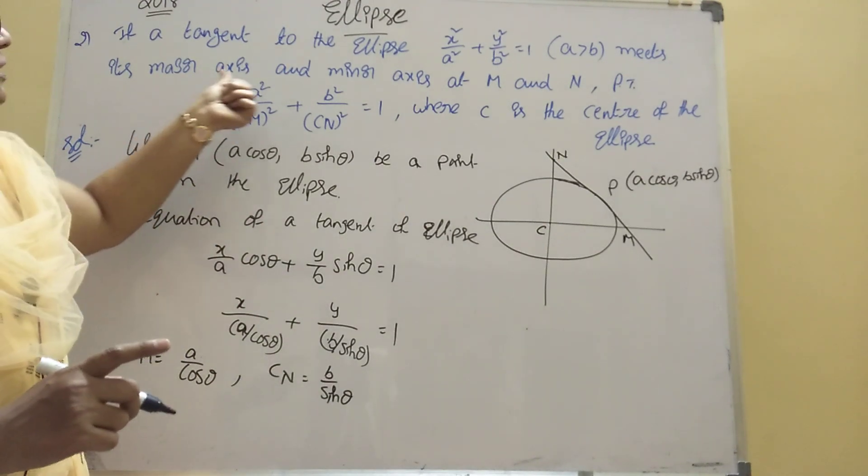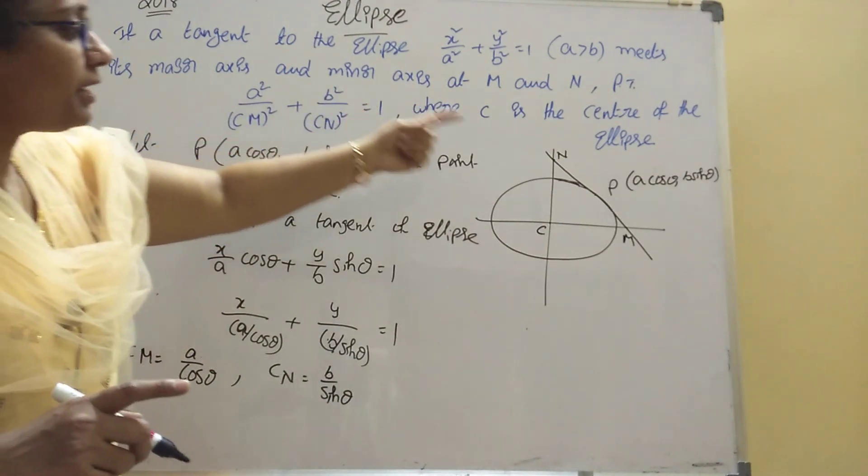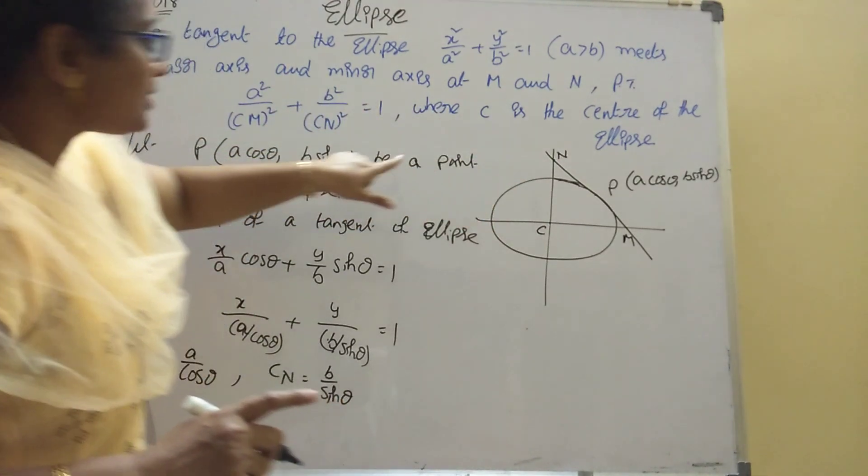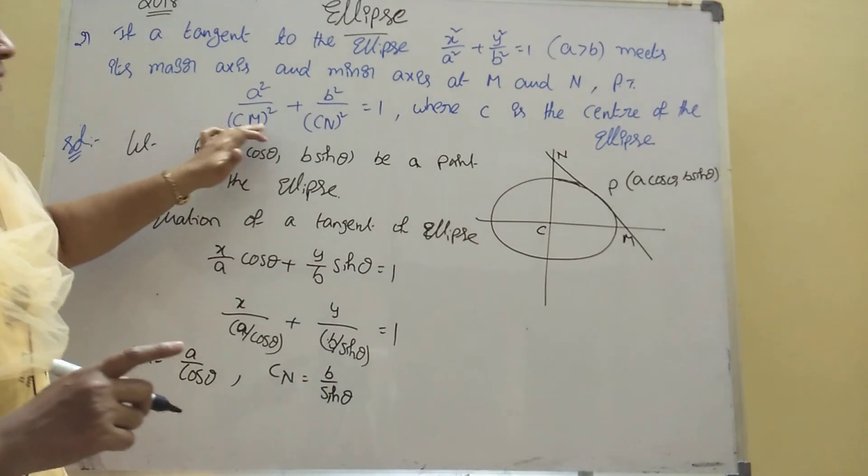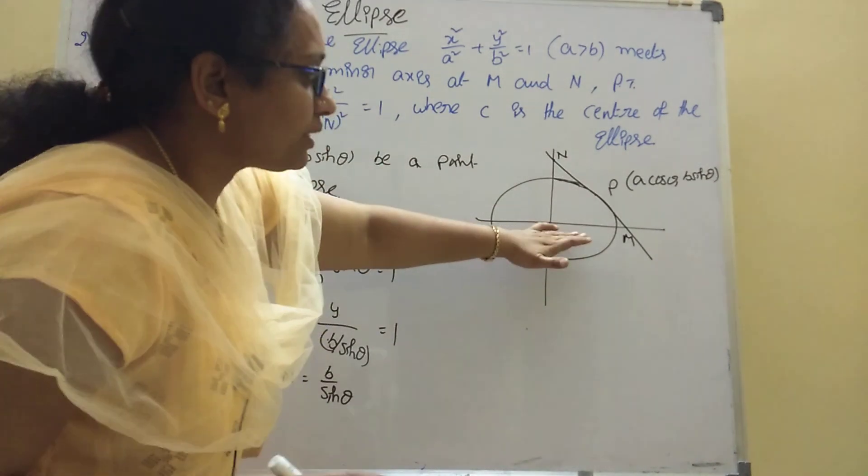The major axis meets at M and the minor axis meets at N. So CM = a/cosθ and CN = b/sinθ.